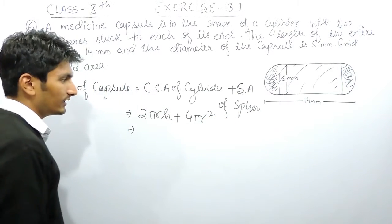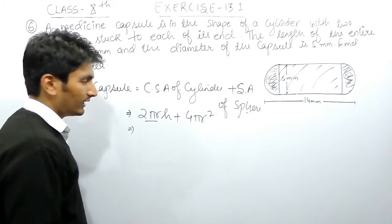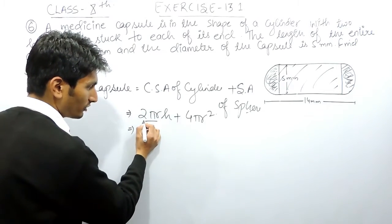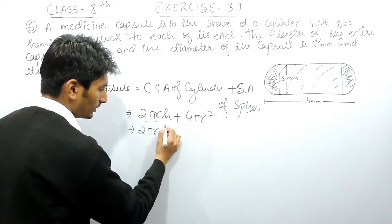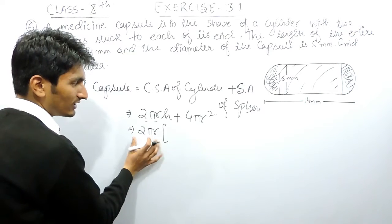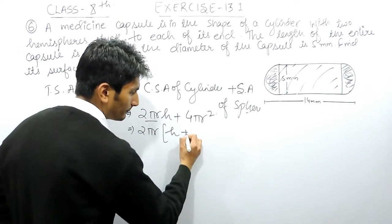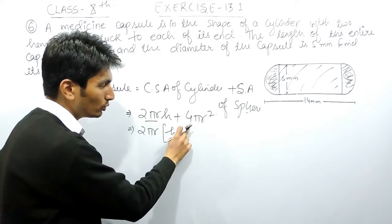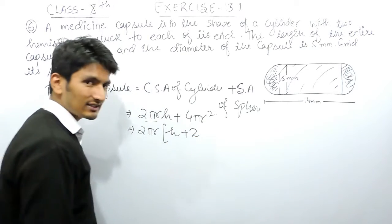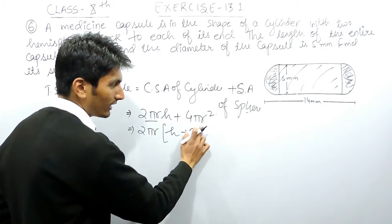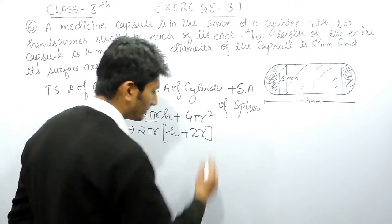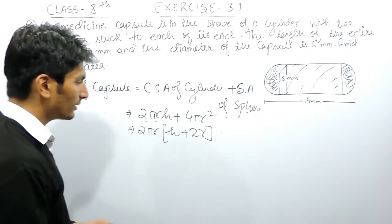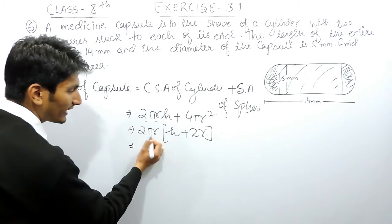Now if you want to solve this, instead of directly solving, first you can take a common factor. In that case you will have to solve the common part only once. If I take 2πr as common, then from 2πrh only h will remain, and from 4πr², writing 4 as 2 multiplied by 2, taking 2πr out, only 2r will remain inside the bracket. So the expression becomes 2πr(h + 2r).